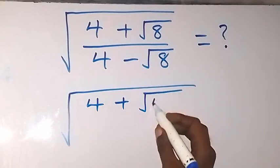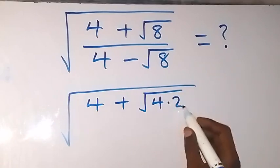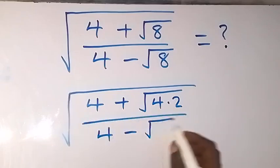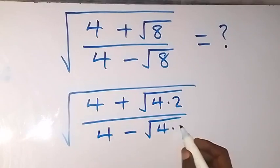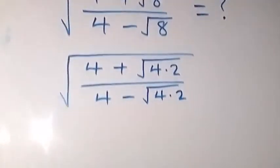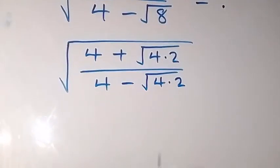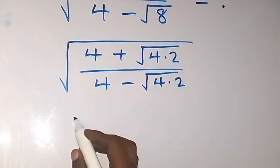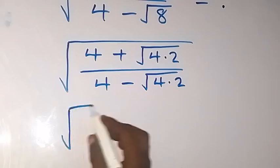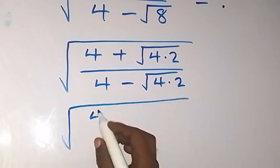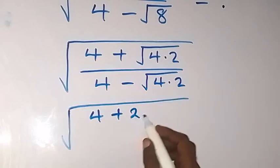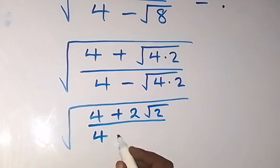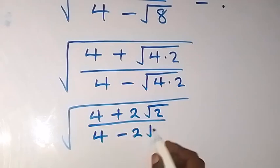We can write this as square root of 4 plus — here, root 8 can be written as 4 times 2 — then divided by 4 minus root 4 times 2. Root 4 separates as 2, so that becomes 2 root 2. This gives us square root of 4 plus 2 root 2, divided by 4 minus 2 root 2.